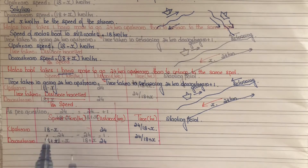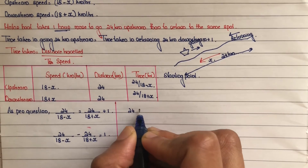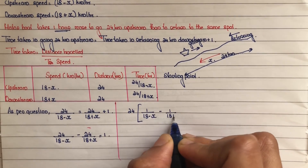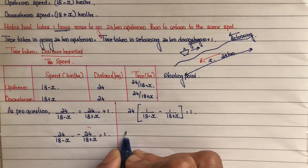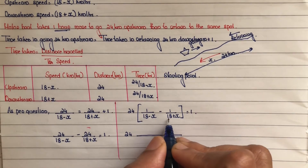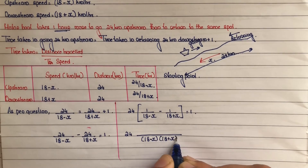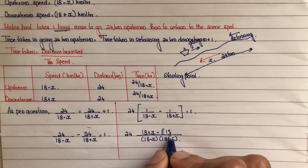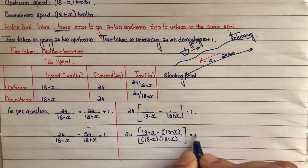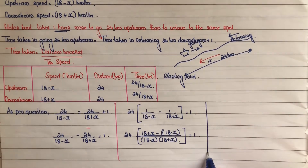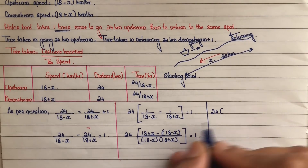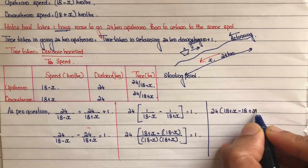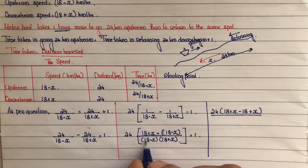As per the question, we form the equation. Taking 24 as common: 24 times [1/(18 minus x) minus 1/(18 plus x)] equals 1. Taking LCM as (18 minus x)(18 plus x), the numerator becomes: (18 plus x) minus (18 minus x), which simplifies by opening brackets to: 24 times 2x divided by (18 minus x)(18 plus x) equals 1.